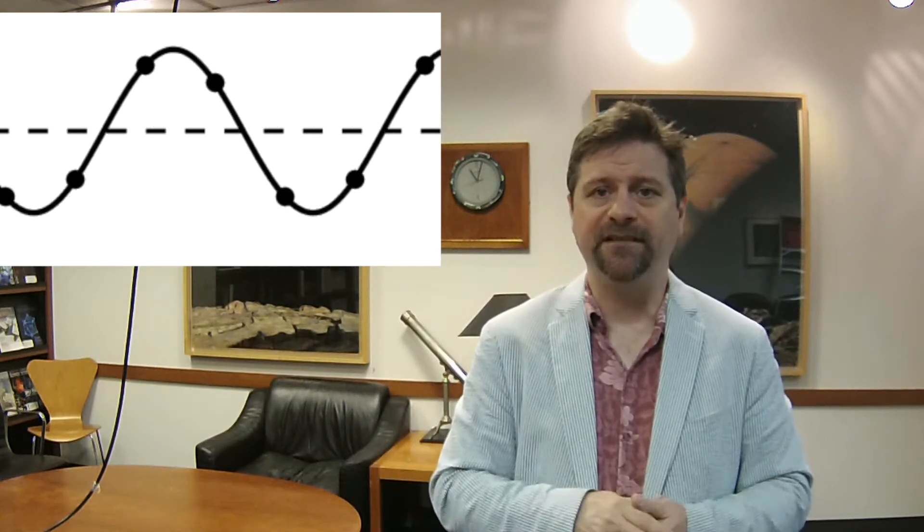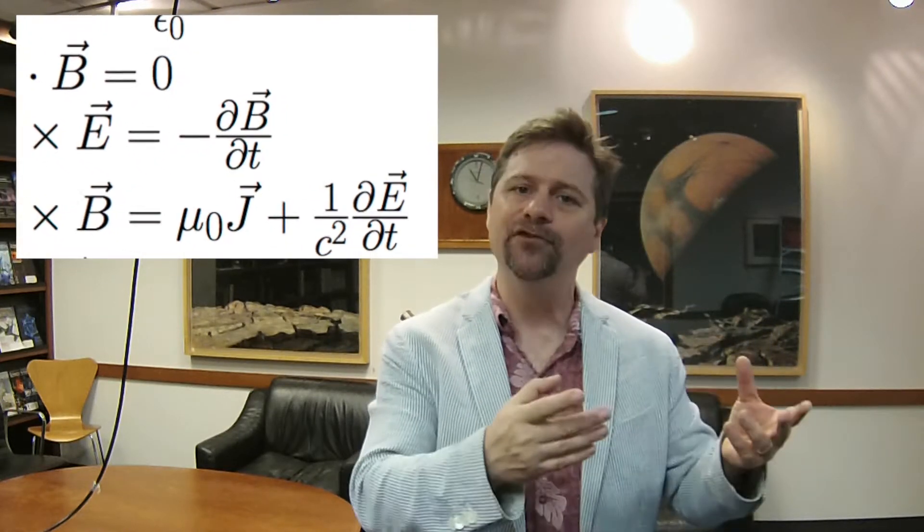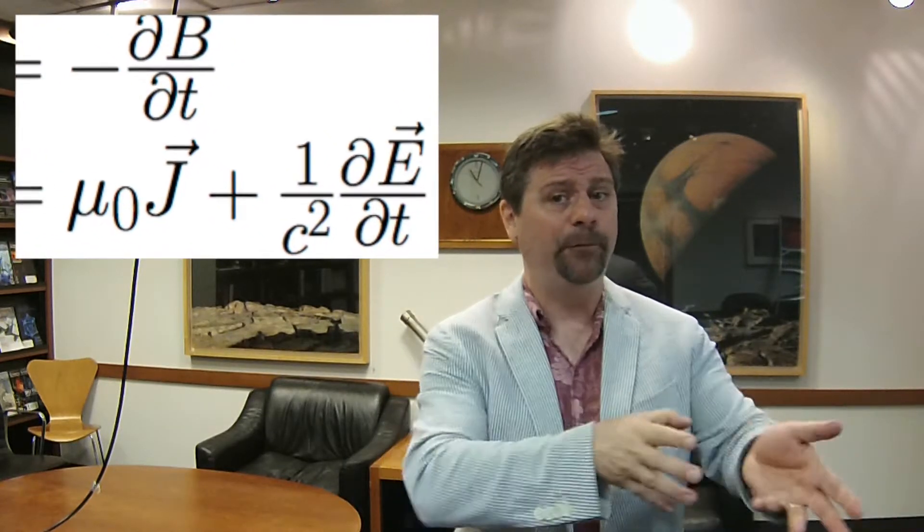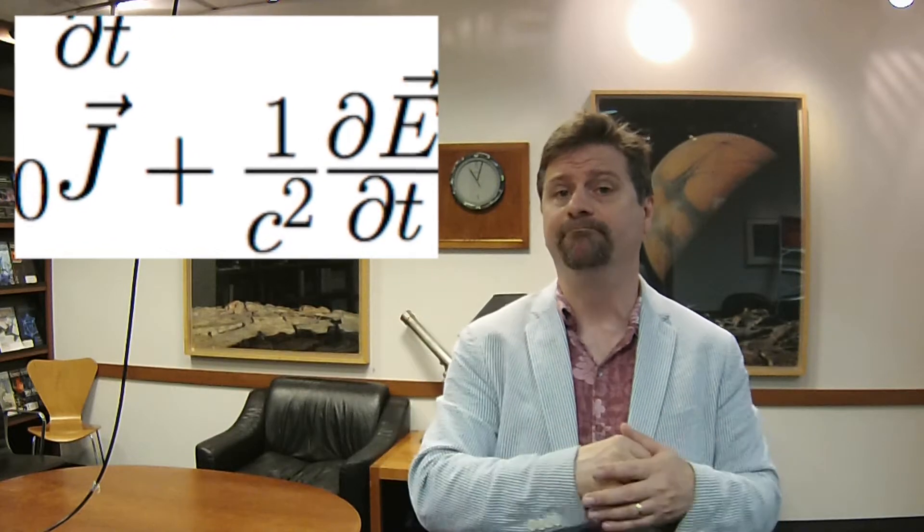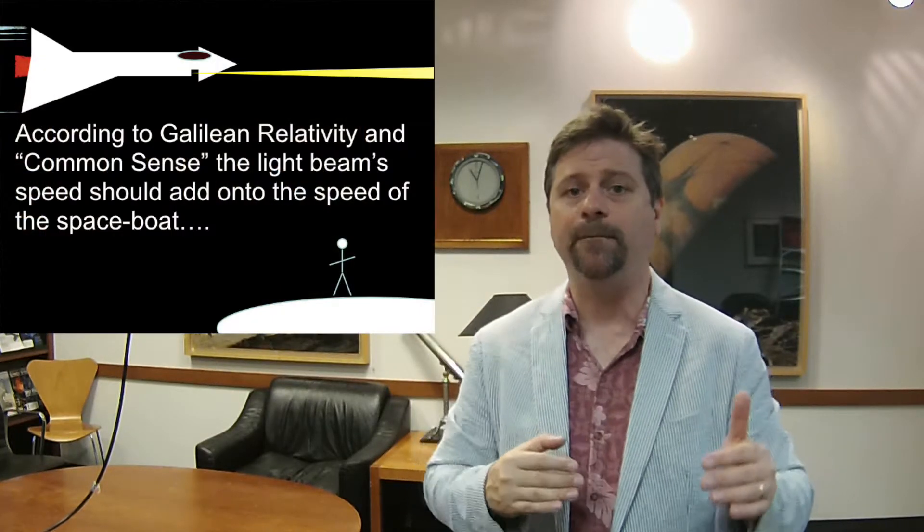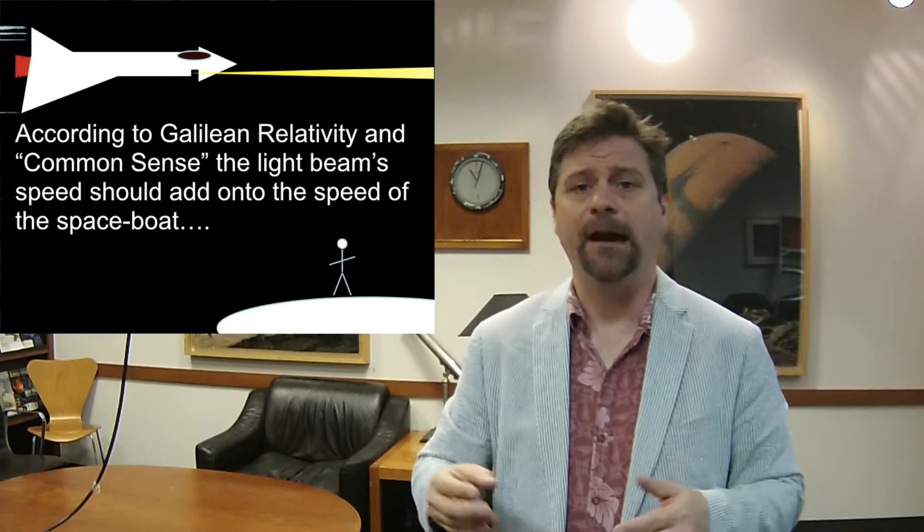Here's the interesting thing. The speed of light enters into Maxwell's equations as a constant, as a conversion factor, as just something that sits there. It doesn't say speed with respect to anything. It just says speed. So that's a big conflict.